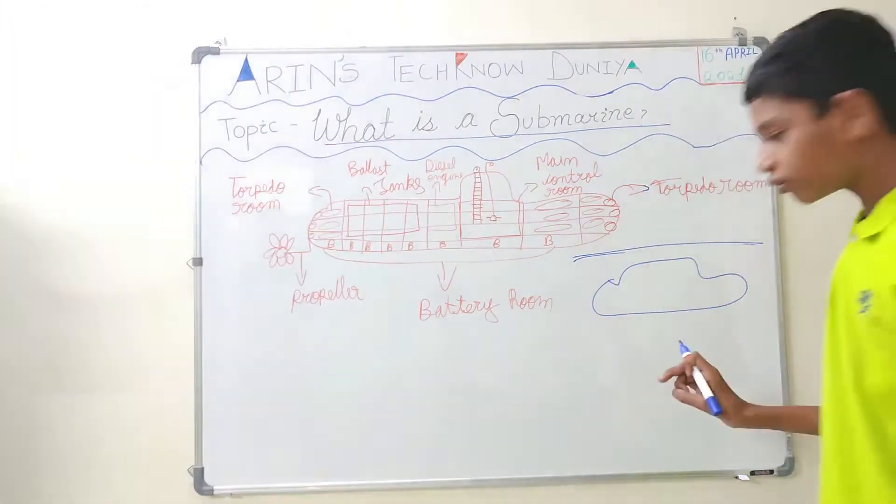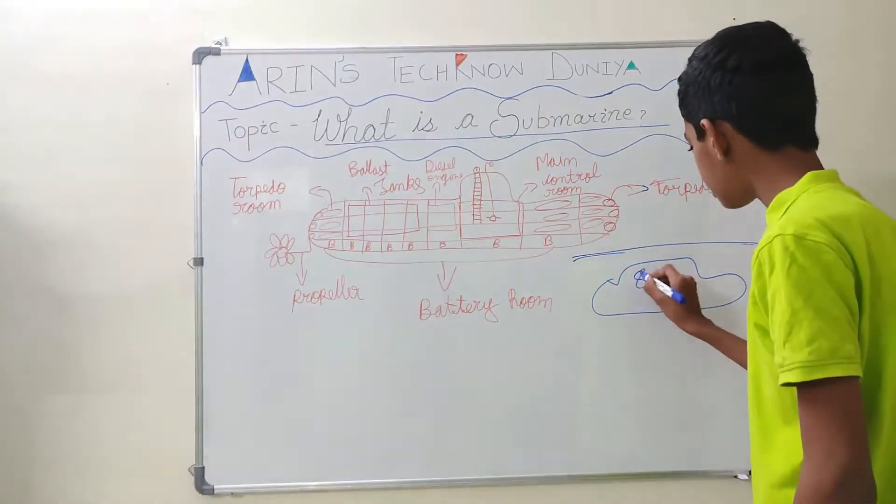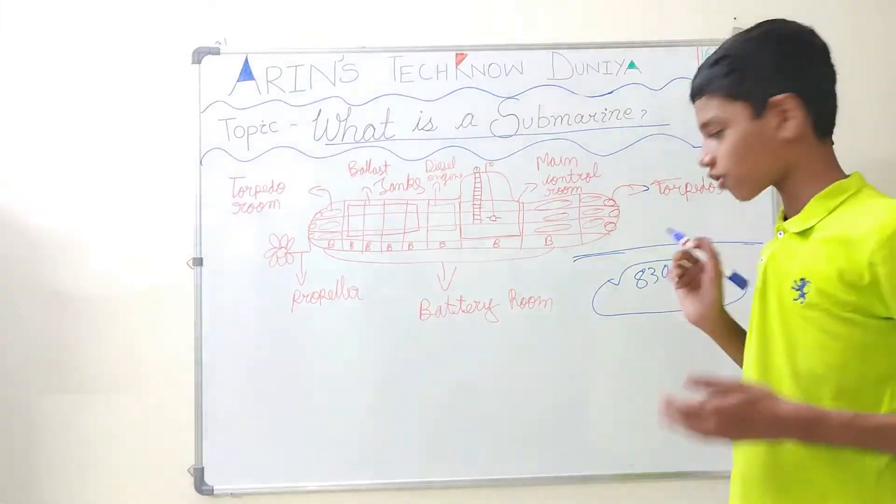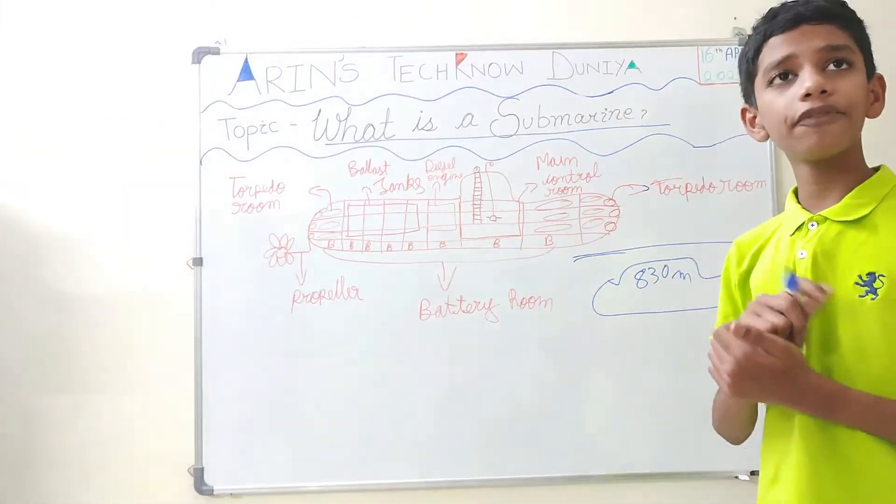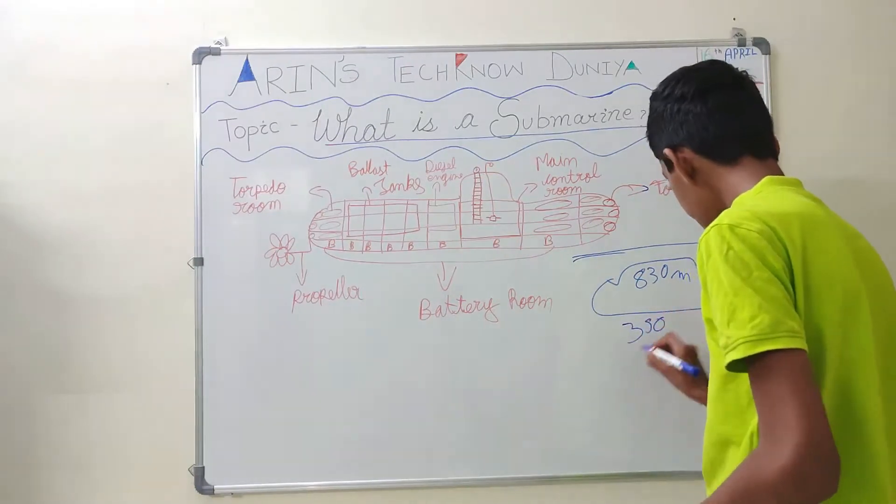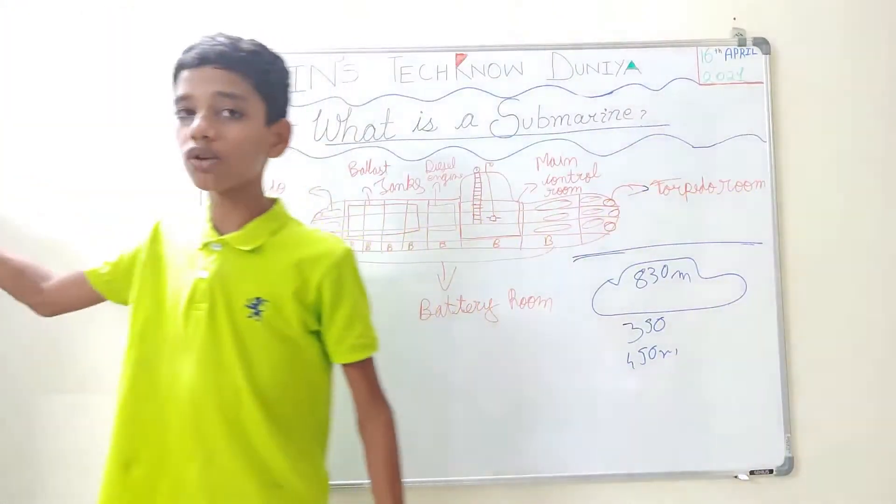It can go up to many depths. The highest depth is 830 meters, made by a Russian submarine that is Oscar class. But if you talk about Indian submarines, they can go from 350 to 450 meters in depth. That is more than a thousand feet.